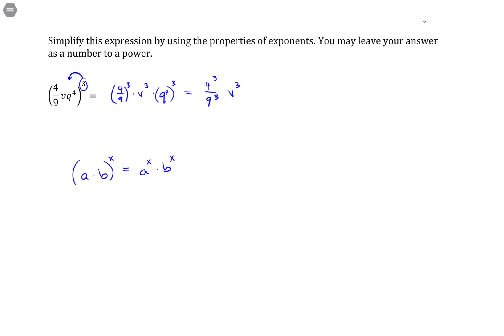But q to the fourth - so I have something raised to an exponent raised to another exponent. There's a rule that says if you have something raised to an exponent raised to another exponent, you can simplify that situation by multiplying those exponents. So this would be q to the 4 times 3, which is q to the twelfth power.